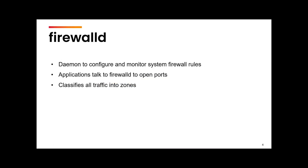In Linux we use netfilter as the network filtering system and firewall D is the daemon used by Red Hat to connect to that netfilter. What firewall D is going to do is filter out all the incoming packets based upon the source or the network interface and then decide whether the traffic is safe for the system or not. All the applications that we use can connect to this firewall D service for opening certain ports or services.